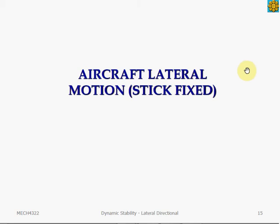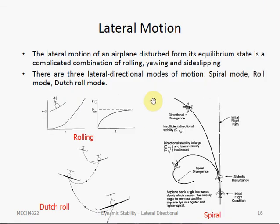In this part of the video, we will analyze the full 3 degree of freedom aircraft lateral motion. The lateral motion of an airplane disturbed from its equilibrium state is a combination of rolling, yawing and side slipping. There are 3 modes of motion in lateral directional and they are rolling, dutch roll and spiral.